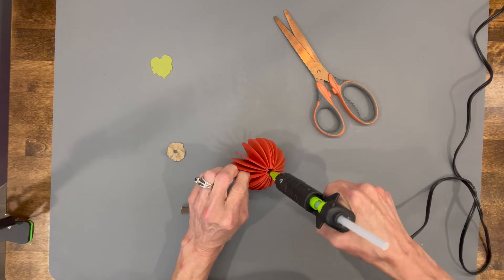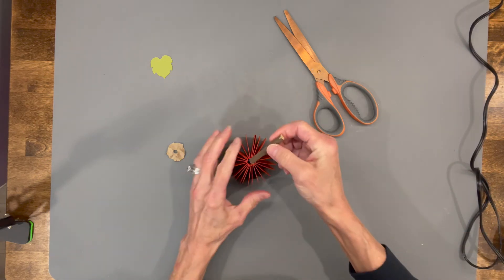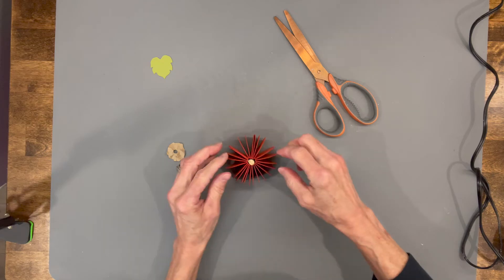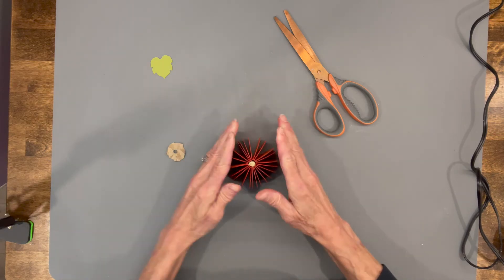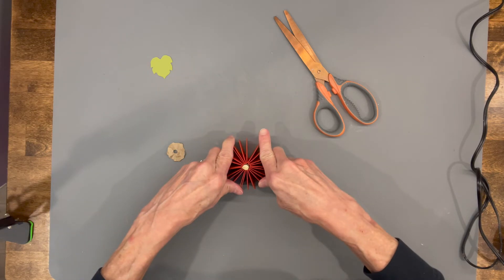Then go ahead and just put hot glue all the way inside of there. Put that stick back in and then squeeze that pumpkin together to make sure that all the sides connect to that stick.